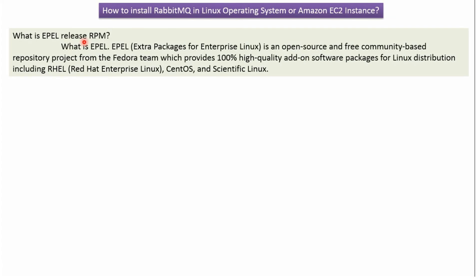The first step is to install EPEL release. Once you install it, we can install RabbitMQ server and its dependency Erlang. EPEL stands for Extra Packages for Enterprise Linux. After installing it, we can proceed to install RabbitMQ server and the Erlang dependency.